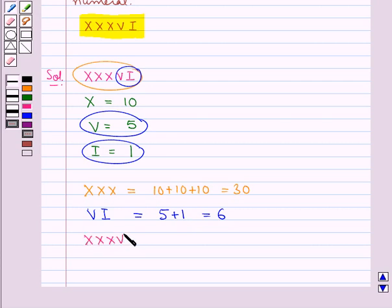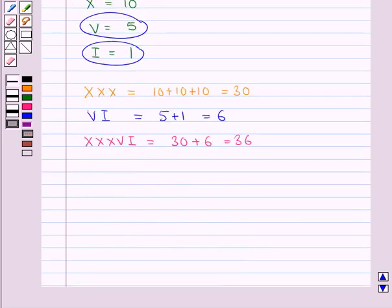Now XXXVI would be equal to the value of XXX which is 30 plus the value for VI which is 6, and this is equal to 36. So we write XXXVI in Hindu-Arabic numeral as 36.